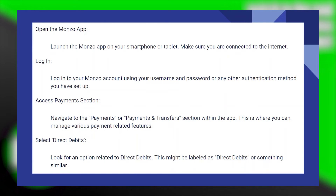Within the Direct Debit section, there should be an option to add a new Direct Debit. Tap on this option to start the setup process.